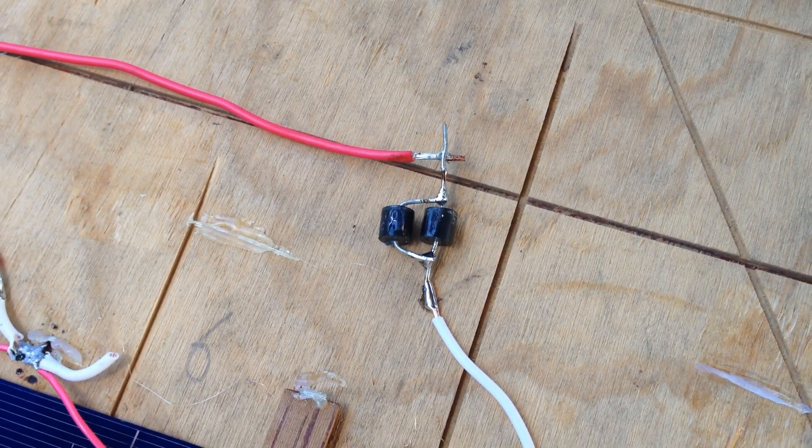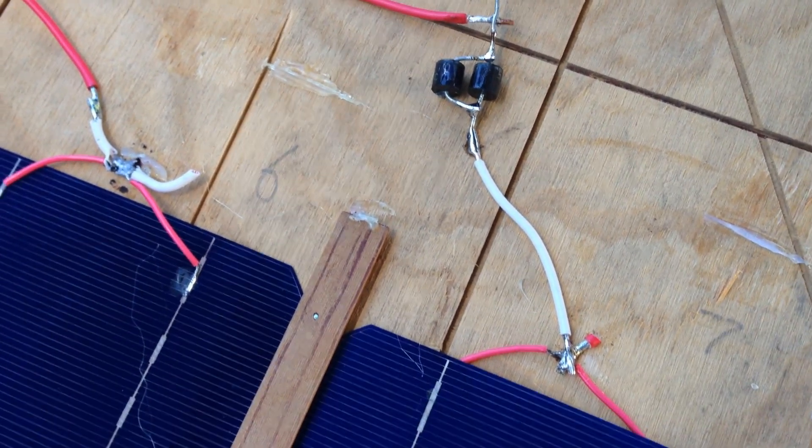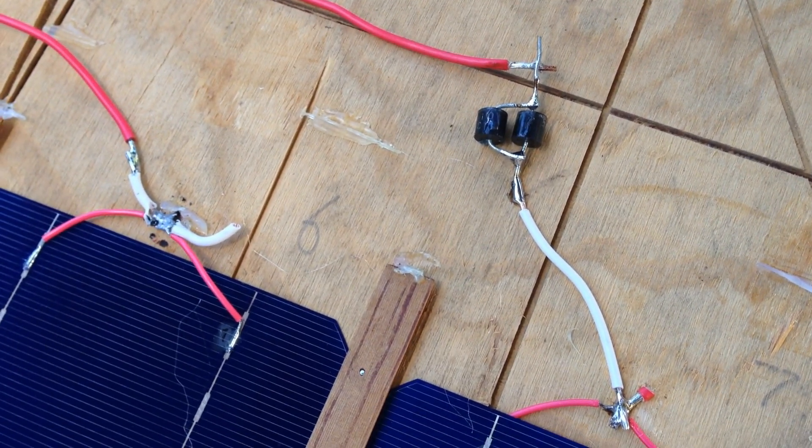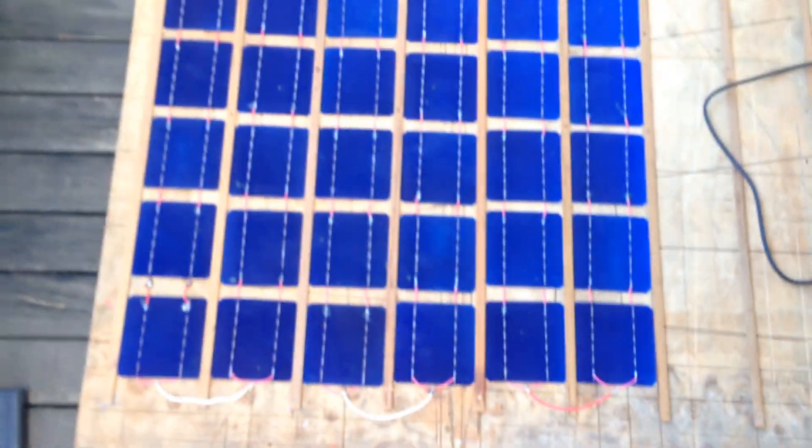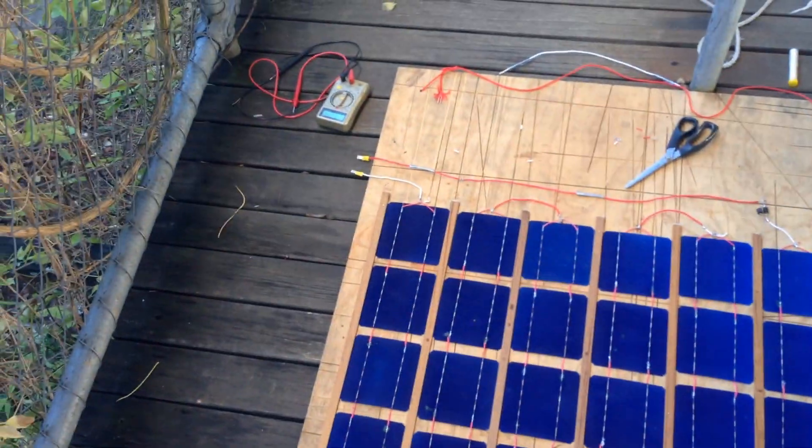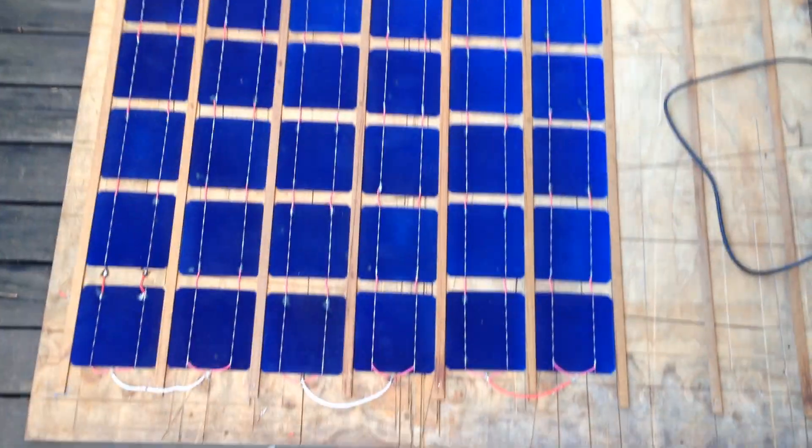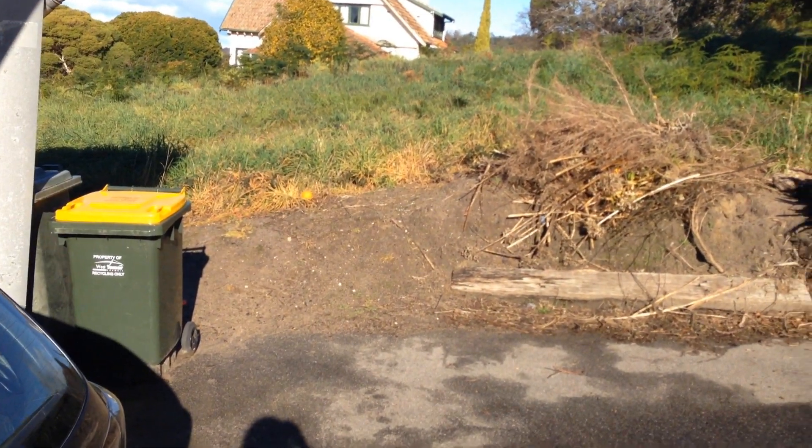I've actually got two diodes in parallel, which I know you shouldn't really do, but I thought it's better than having the diode burn out from too much current. They are 10 amp diodes, but I thought it was just safer to have two in parallel. So what I'll do now is hot glue some of these wires in place to stop the wind from blowing the cells out again, and then hopefully I'll be able to show you what it can do. It's a pretty sunny day today, so probably perfect conditions for showing off the solar panel.